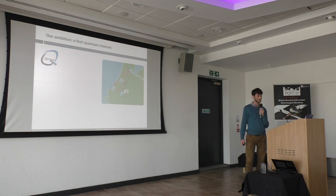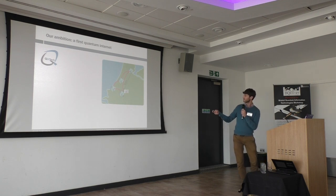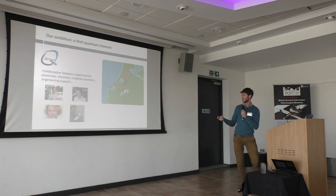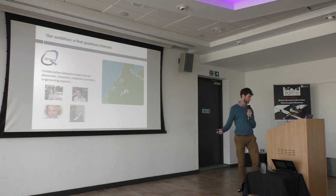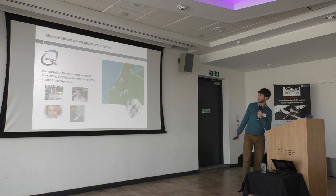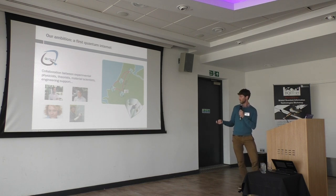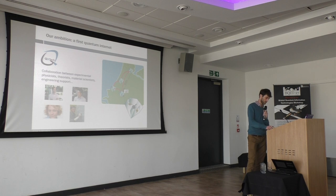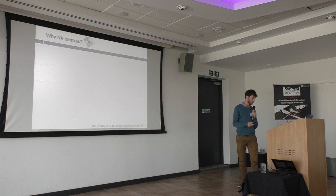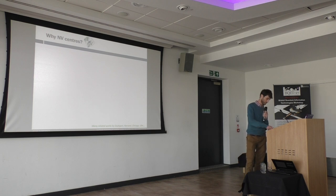Our ambition over the next few years is to build a tens-of-kilometer scale quantum internet using several nodes, and we're doing that by drawing on a diverse team of experimental physicists, as well as theorists, material scientists, and engineering support. Our vision is to use the nitrogen vacancy centre, which Jason has already introduced, because it has several key useful properties for quantum networks.